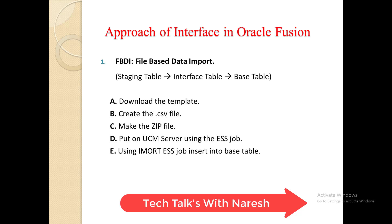The first approach is FBDI — File-Based Data Import. First we download the template; there is a link for every FBDI template on the Oracle site. Then we fill that respective CSV or Excel file with our data — for example, supplier details. We prepare a zip file using a utility that is already available. So we insert the data, create the zip, and then upload that file to our Oracle Fusion instance.